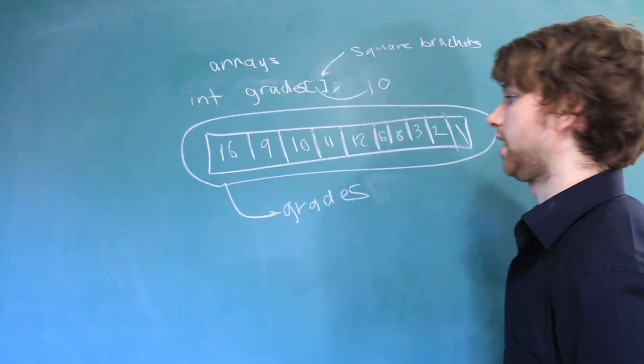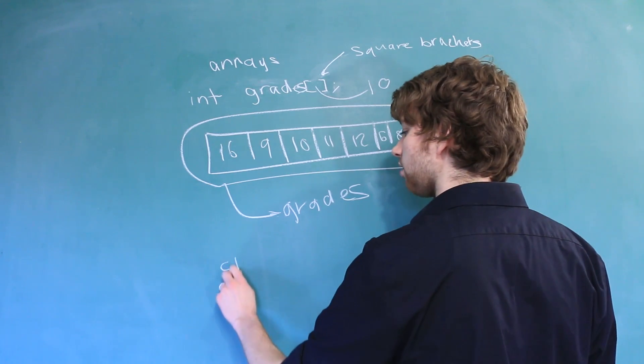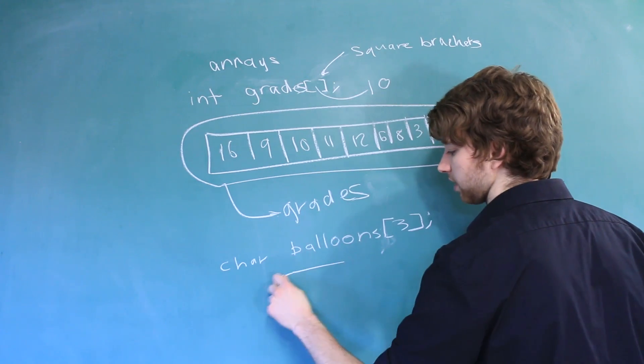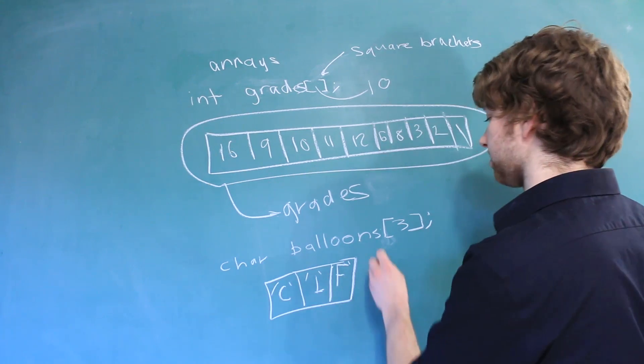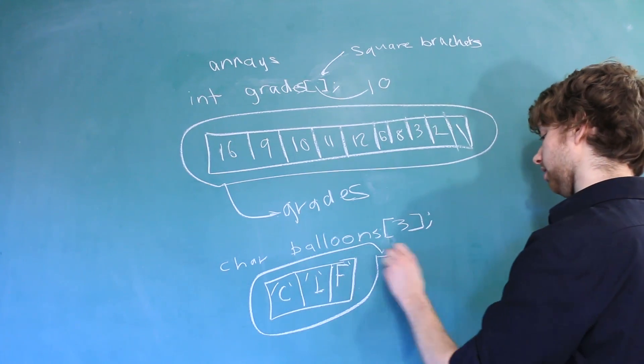You could also have arrays of different data types. For example, you could have a character array. And this would look something like this where each one of these is an individual character. And this entire thing is balloons.